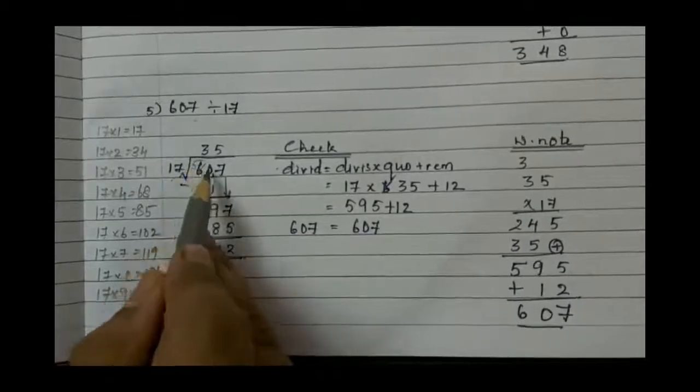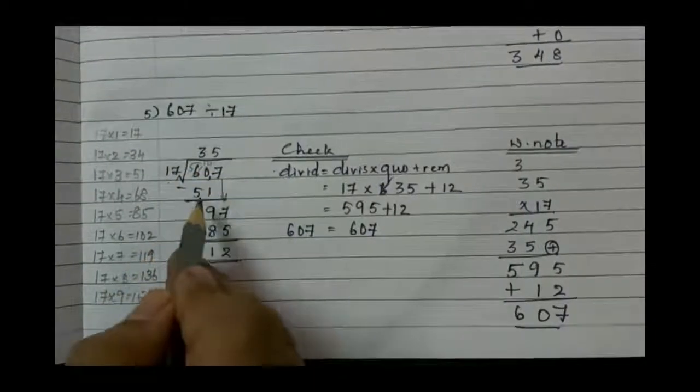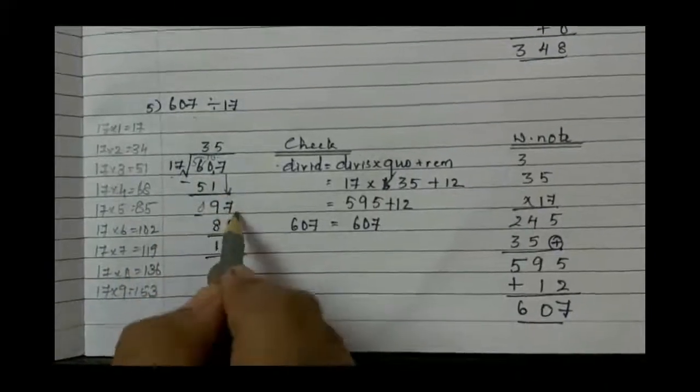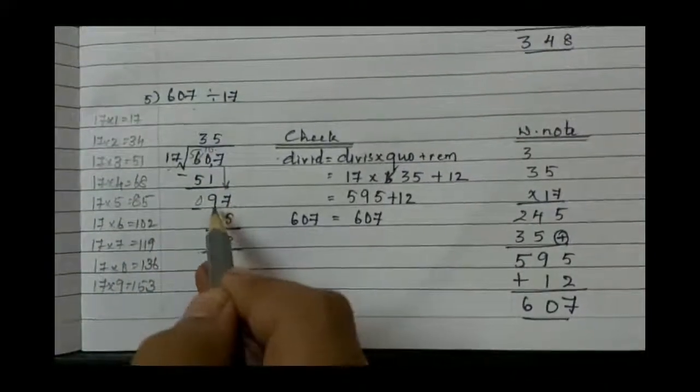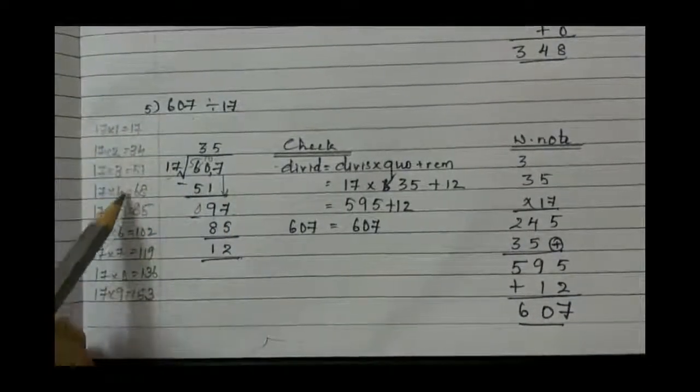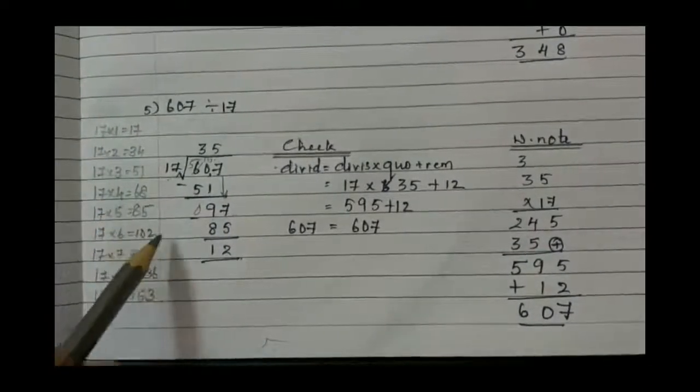6 becomes 5 and 0 becomes 10. 10 minus 1 is 9, 5 minus 5 is 0. Bring 7 down, so it will become 97. In table 17, you need to search where do we get 97? See, we don't get 97 anywhere.